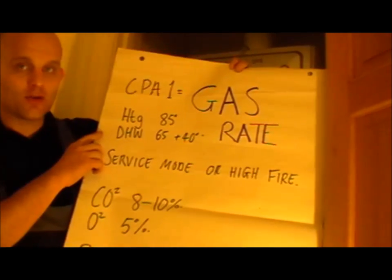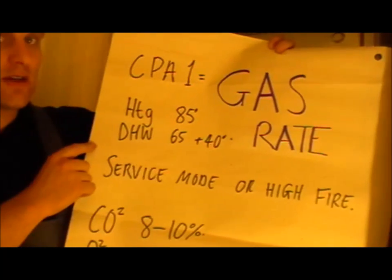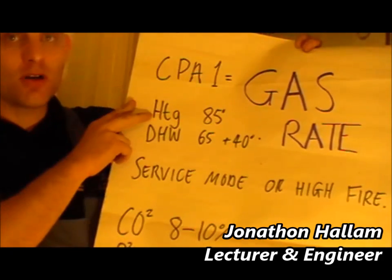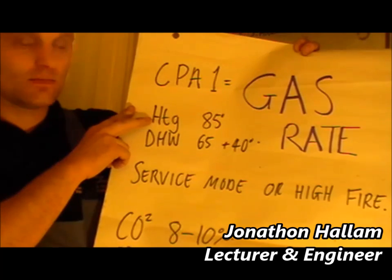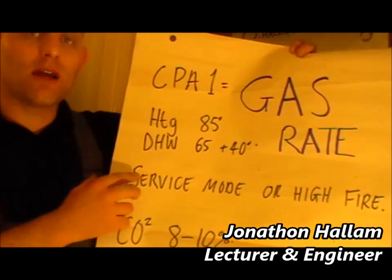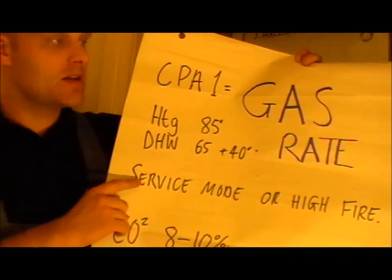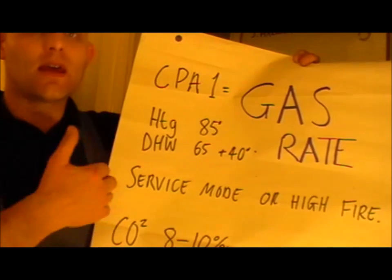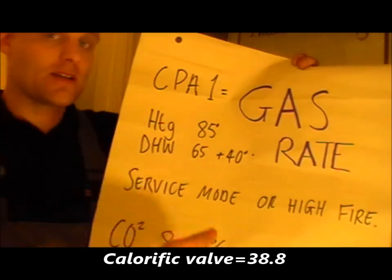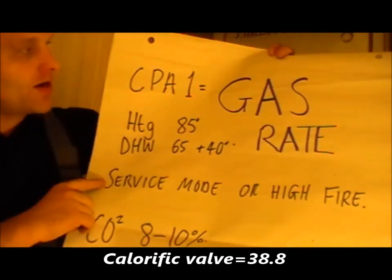We're looking at flow temperatures as well. If you install the appliance, you will check the flow temperatures: heating is 85 degrees, flow and return will be within 11 degrees. Modern condensing boilers are lower than that. Hot water is 65 degrees, but modern combination boilers now only heat the water up to 40 degrees — so if the cold main is 20 degrees as water regulations stipulate, it'll make it 60.